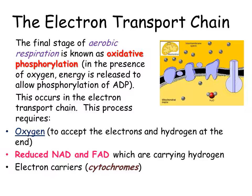For this process to happen we need oxygen, we need the reduced NAD and FAD which come from the earlier stages of aerobic respiration, and the electron carriers — cytochromes — which are proteins. Together these proteins form what's called the electron transport chain.